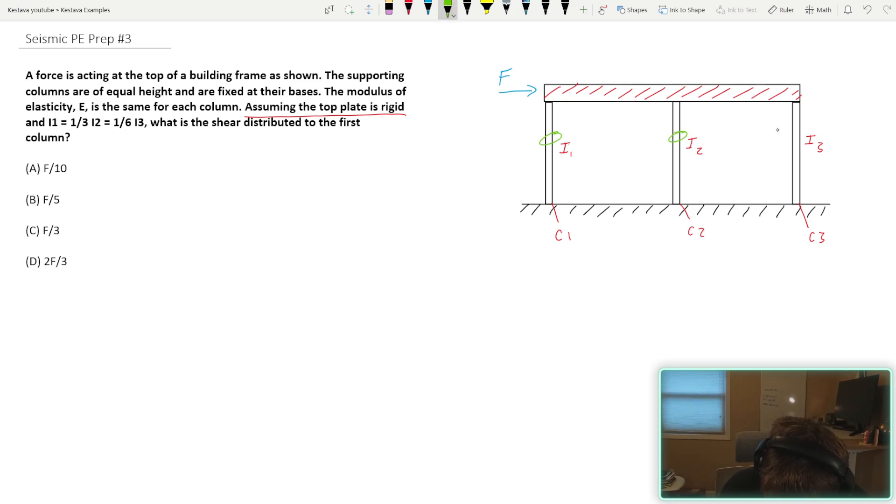Column one, column two, and column three. So this is kind of like an inverted pendulum type system that we have going on here. We know we have fixity at the base. And since we have a rigid diaphragm at the top, we are also going to assume that we are fixed at the top of our supports as well. So we have a fixed-fixed column condition.